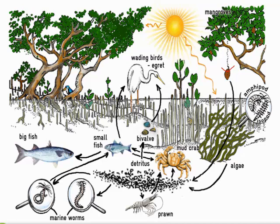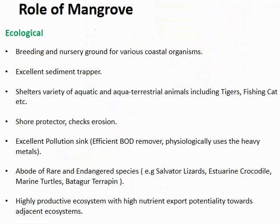In the detritus food chain: litter fall produces organic matter, which becomes detritus. This detritus is taken as food by prawns, marine invertebrates, and small fish. Small fish are taken by larger birds — many birds feed on small fish in the mangrove. The small fish are also taken by big fish, and the big fish are ultimately taken by humans. So it is a huge chain — a detritus food chain of the mangrove ecosystem.